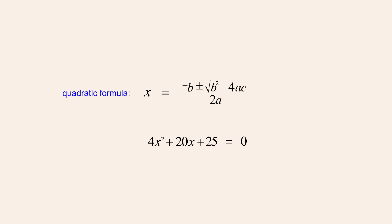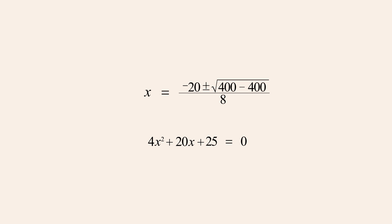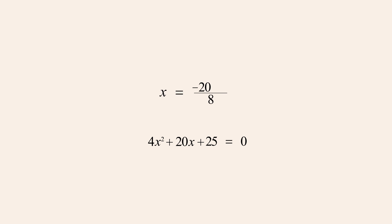This quadratic equation is in general form and its constants a, b, and c are 4, 20, and 25. We now substitute these values into the quadratic formula and simplify, replacing a with 4, b with 20, and c with 25. We see that the numbers under the square root sign reduce to zero, and so the plus or minus sign adds or subtracts a value of zero, resulting in a single x-value instead of two x-values. The quadratic formula therefore produces a single solution, negative five-halves, which corresponds to the single zero of the quadratic function 4x-squared plus 20x plus 25.